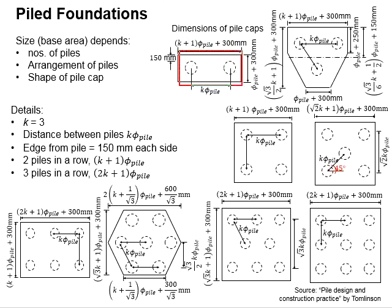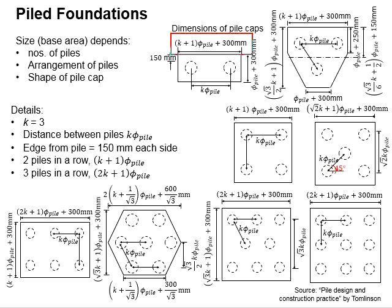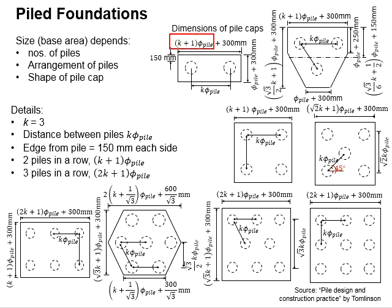When there are 2 piles along a line, as indicated here, the width of the pile cap will be equal to (k + 1) times the pile size plus 300 mm. The term (k + 1) times the pile size refers to the distance from the edge of one pile to the edge of another — that is k times the pile size, plus half of the pile diameter on each side.